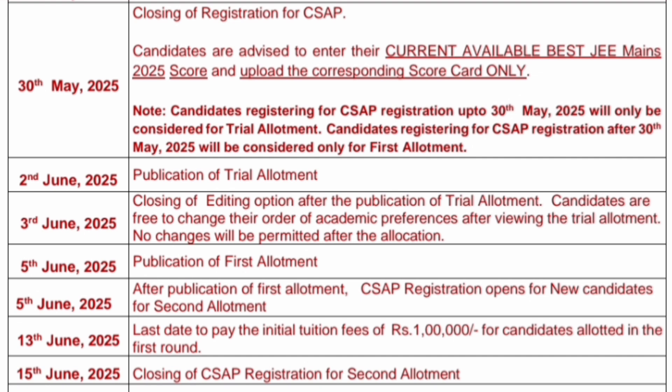All those who have not seen the dates, please remember 30th May 2025 is the last date for registration for CSAP. CSAP candidates are advised to enter their current best JEE Mains 2025 score and upload the corresponding scorecard only — specifically the one showing the best of your two scorecards. If you register by 30th May, you are eligible for the trial allotment. If you register after 30th May, you will only be considered for the first allotment.